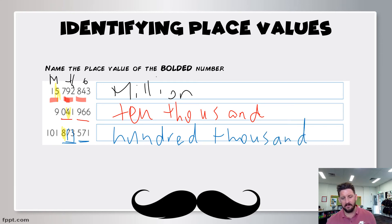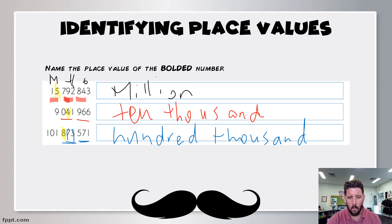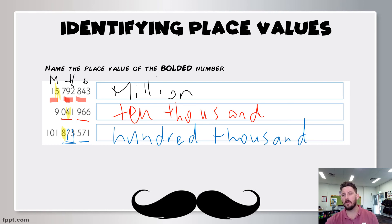Looking at the next example — it's not in the ones section, it's in the thousands section. Going from right to left: thousands, then ten thousands on the next house, so it lies in the ten thousands house. I go a group of three for ones, second group of three for thousands. The first house is thousands, ten thousands, and the next is hundred thousands — so I'll write hundred thousands. Whenever we order these numbers, we go to the highest place value, which is on the left-hand side. The highest place value in the bottom number is one hundred and one million, which is bigger than fifteen million, which is bigger than nine million. Whenever we read numbers lined up, we look at the highest house.